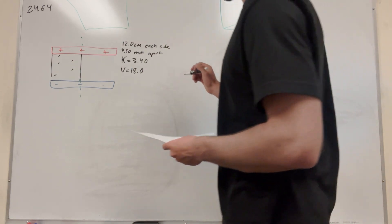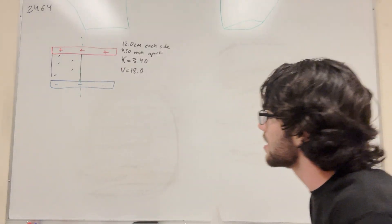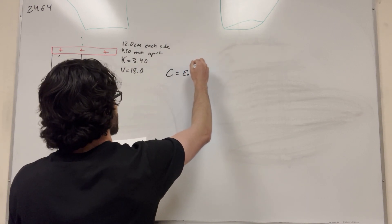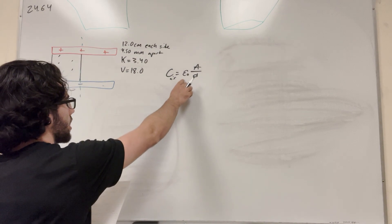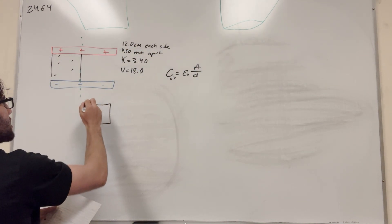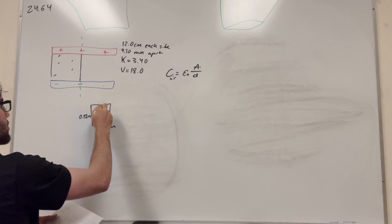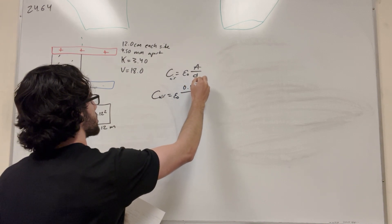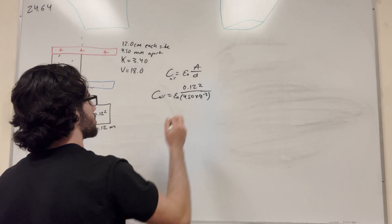We're going to be using the formula for capacitance. We know that capacitance C is equal to epsilon-naught times area over distance. So this is for air. Epsilon-naught we know is our constant. Distance is given to us, and we're going to need to find area. We have 12 centimeters on each side, so area is 0.12 meters times 0.12 meters, which is 0.12 squared. So C_air is equal to epsilon-naught times 0.12 squared, over the distance, which we convert to meters: 4.50 times 10 to the negative 3 meters.